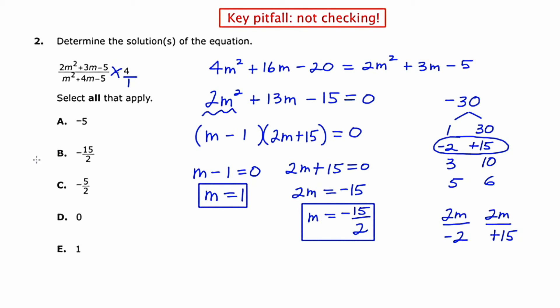Now, both 1 and negative 15 halves are on the list. But let's go back to the initial comment that I made in the red box. The key pitfall that I would identify in this question is that students will forget to check. And if we were to plug 1 back into the original, so let's actually do that. Let's take this original denominator specifically.